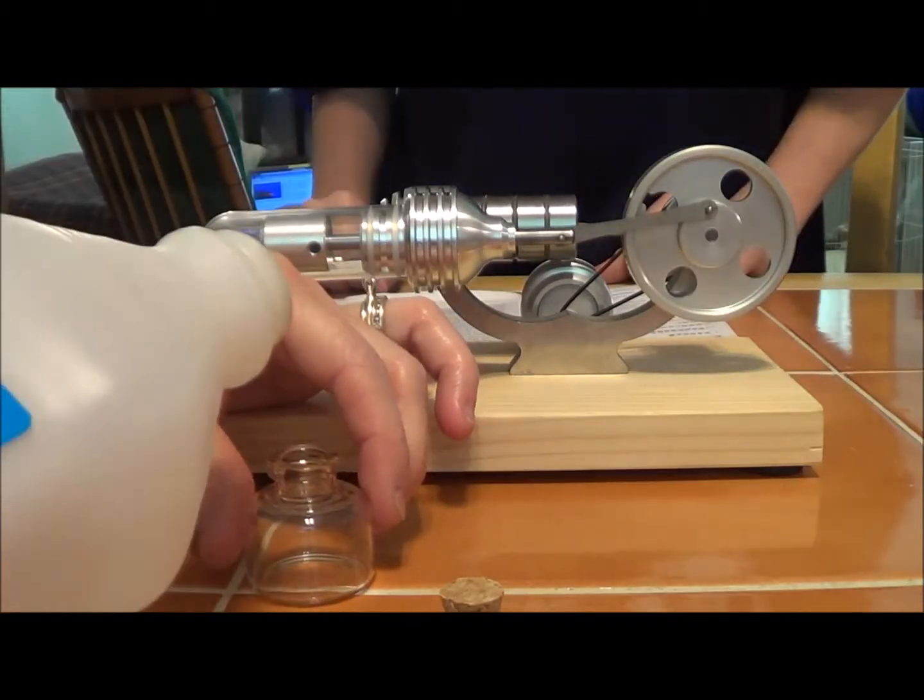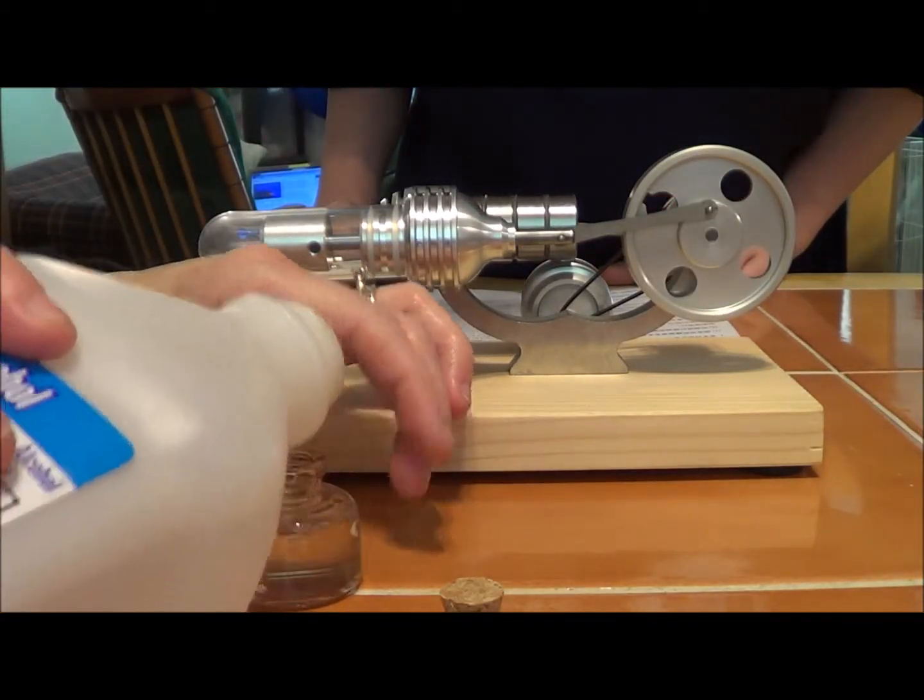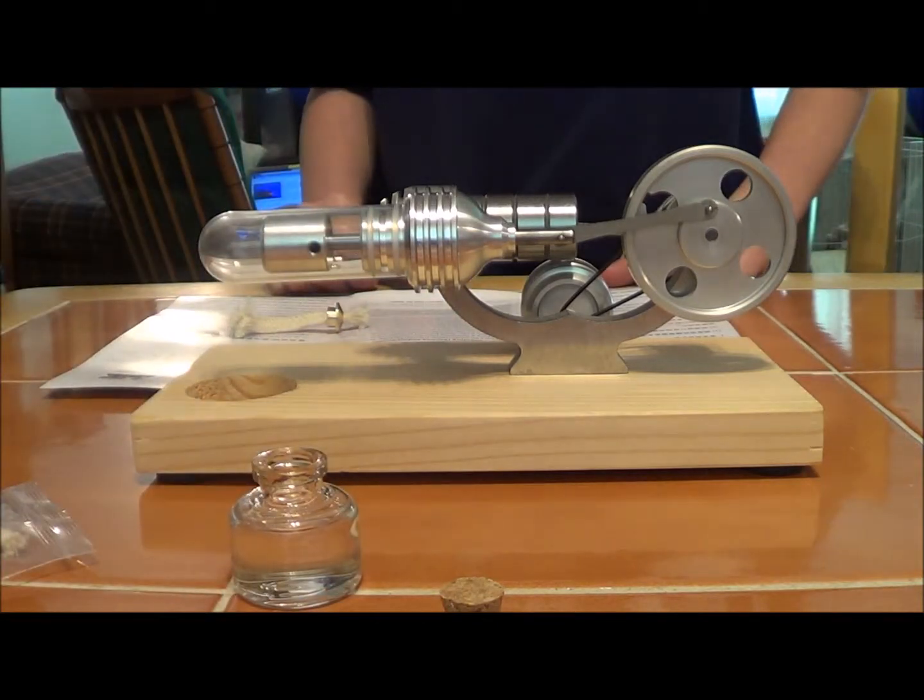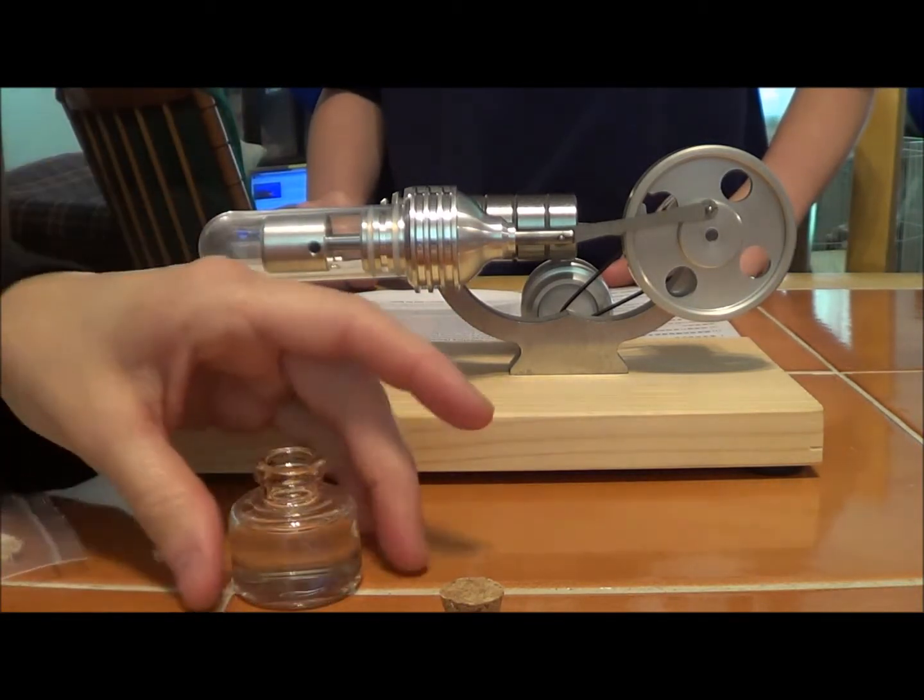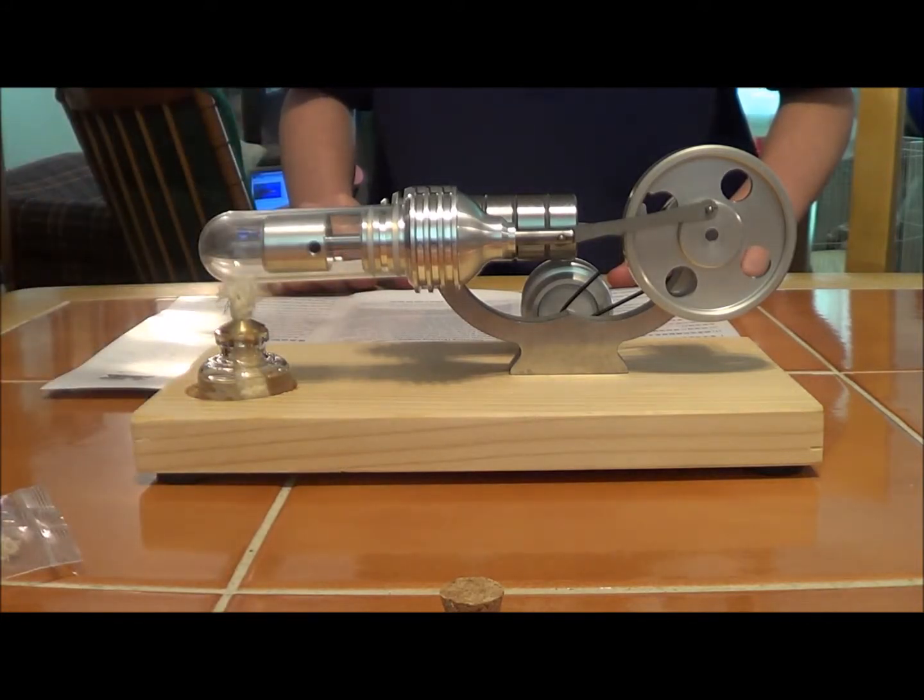And then we use isopropyl or rubbing alcohol as our fuel, so we just filled the little bottle and then we stuck the wick up through the metal top. We let it get completely wet because the whole wick really needs to be good and wet in order for it to light and work.